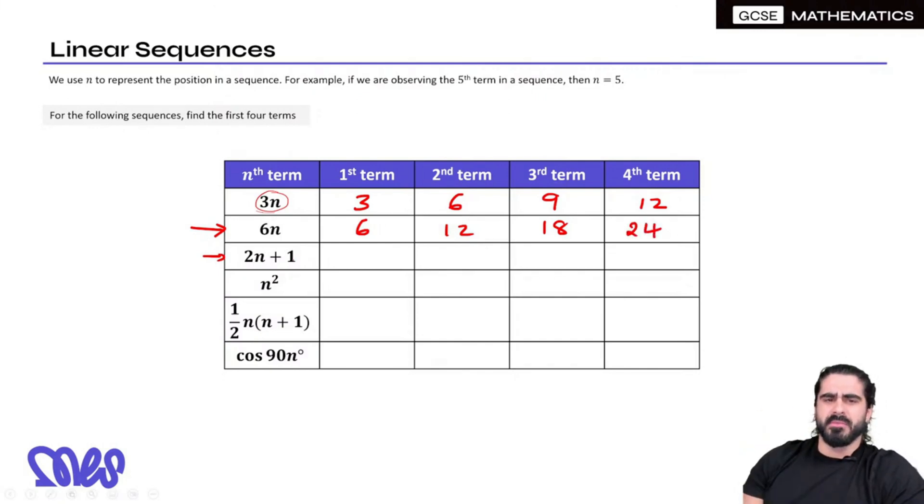Now a little bit more calculation, but 2N plus 1. So the first term, remember you have to do it in the correct order. So it would be 2 times 1 plus 1, which is 3. When N is 2, we have 2 times 2 plus 1, so we've got 5. And then the last one, we have 2 times 4 plus 1, and we've got 9 there.